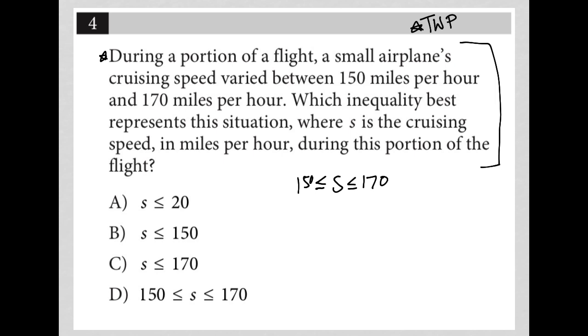The next sentence says which inequality best represents this situation where s is the cruising speed. So we have the right variable there in miles per hour. So we have the right units there, nothing to convert during the portion of this flight. So I think we're good just by translating that first sentence there. And therefore the answer must be choice D.